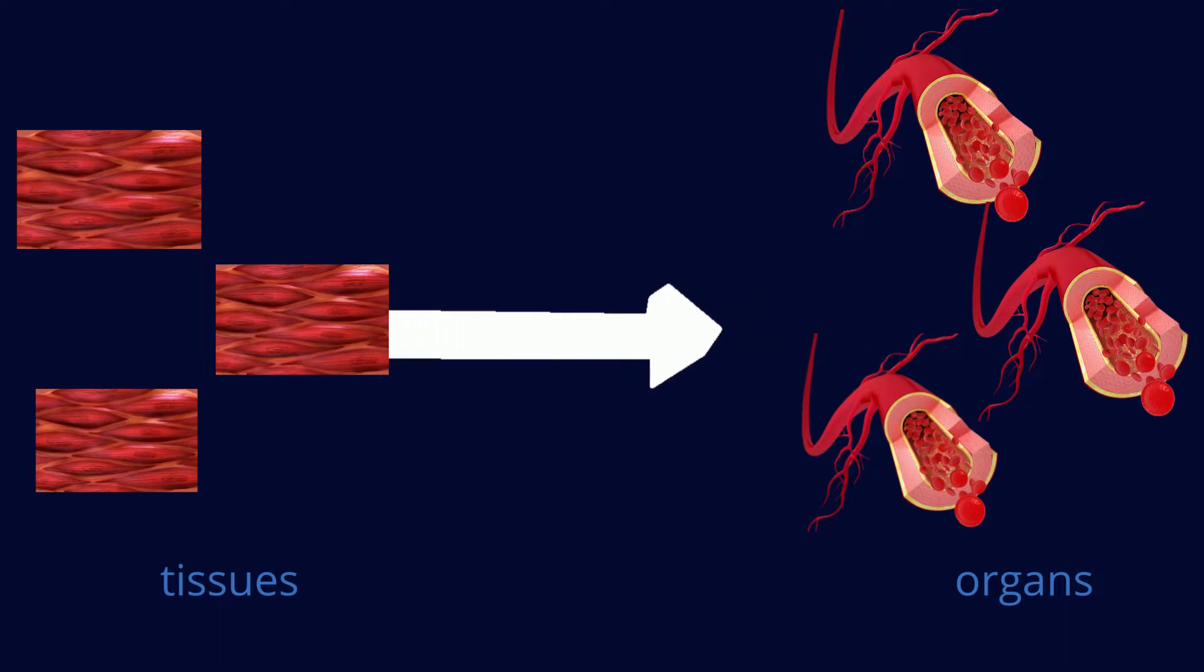the blood vessel is an organ because it is formed by three types of tissues: the smooth muscle tissue in the middle, the epithelial tissue lining the interior of the blood vessel, and the connective tissue as the outermost layer.